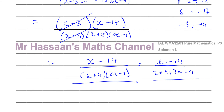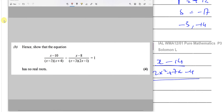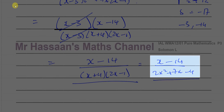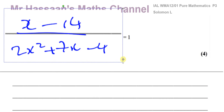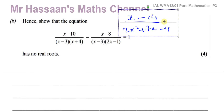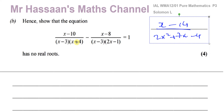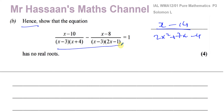That's the answer to part A. For part B, I'll need that answer. It says: hence, show that the equation x minus 10 over x minus 3 times x plus 4, minus x minus 8 over x minus 3 times 2x minus 1, equals 1 has no real roots. When it says 'hence', it means using what we just did. So this whole expression equals x minus 14 over 2x squared plus 7x minus 4, and that equals 1.